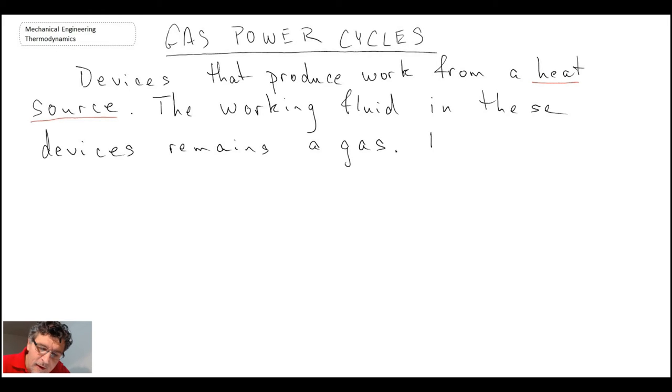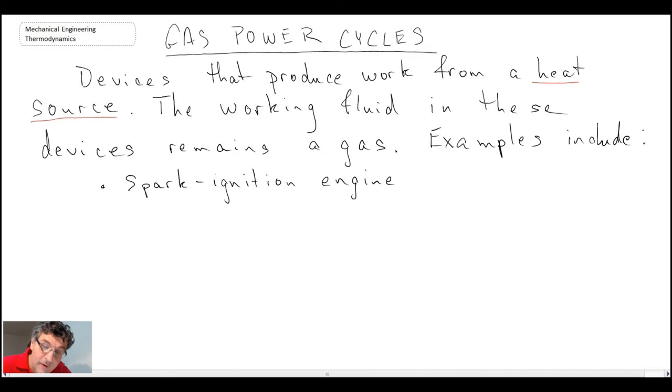Examples of these gas power cycles include spark ignition engines. These are engines where you have what we call a spark plug - a gap between two metals where you put a high voltage across it and you'll get a spark forming. That is what initiates the combustion within our cylinder. These tend to be quite popular and are used in a lot of cars.